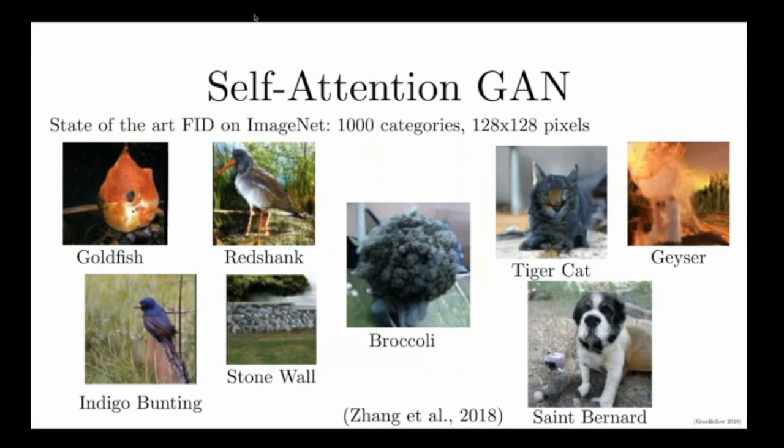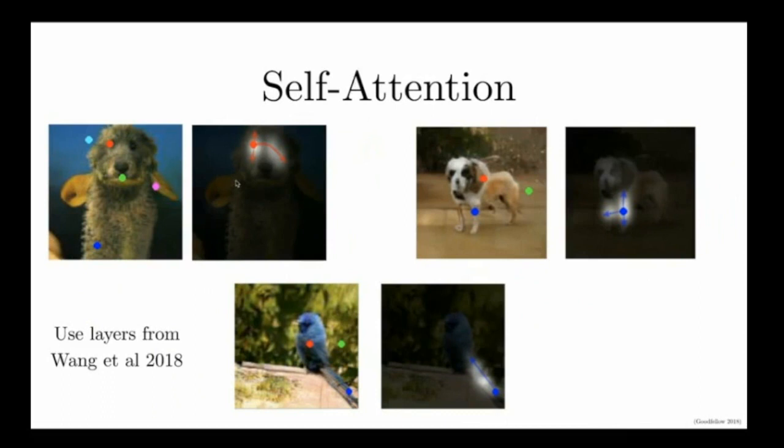There are a thousand of these categories, and some of them have relatively little structure, like the geyser shown in the upper right here. Generative models have been good at making these relatively unstructured images for quite a while. But what's harder for them is to make images that have a lot of structure, like these birds that have thin vertical legs and a beak, and we need everything to actually fit together in a coherent pattern to make a bird shape. Until recently, this was very hard for generative models.